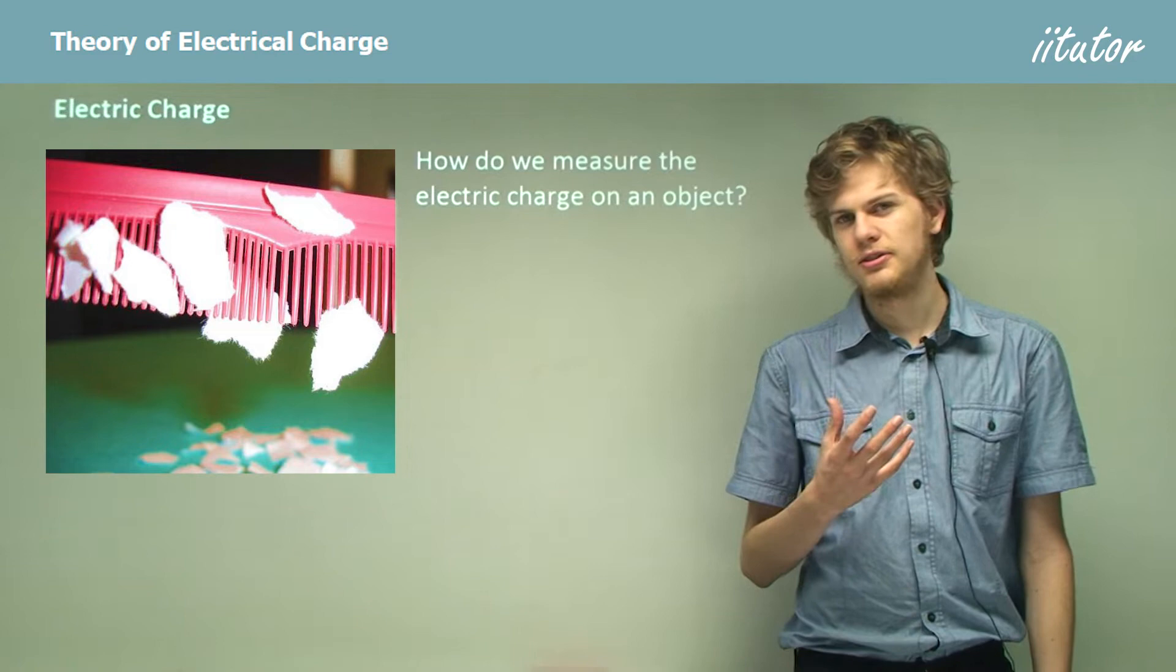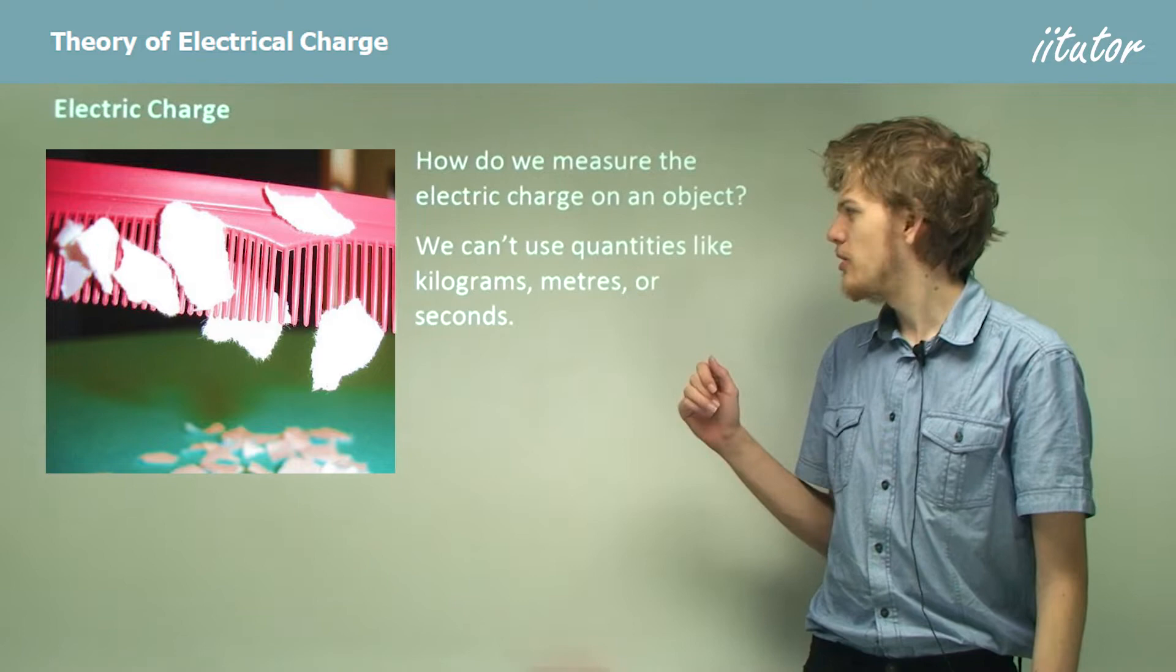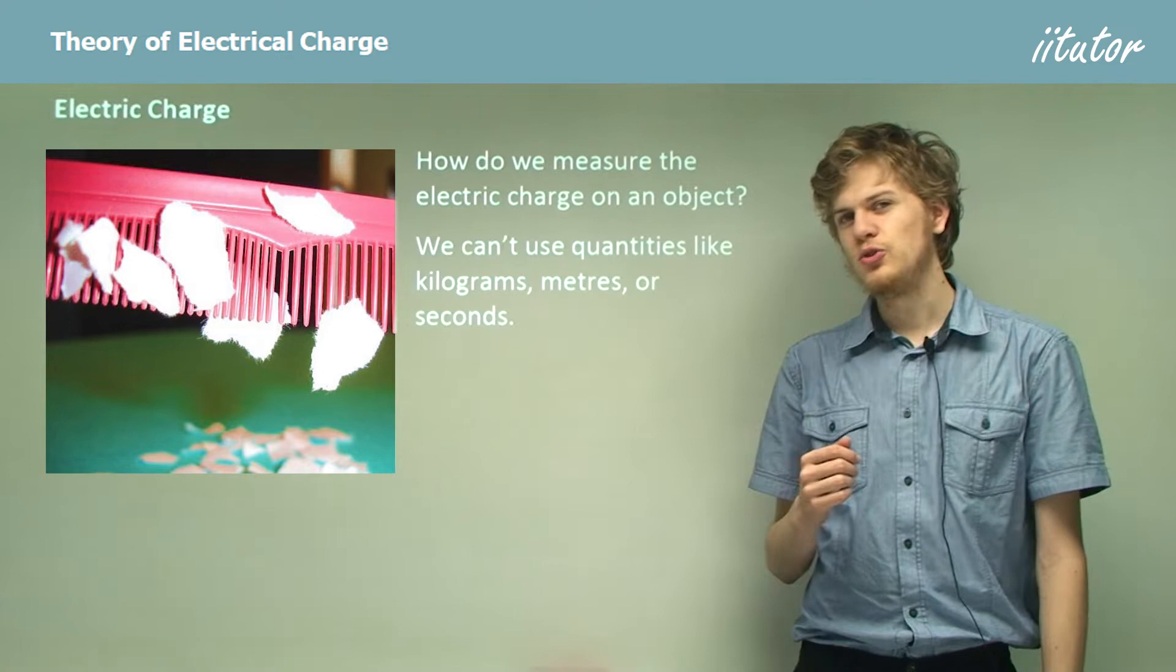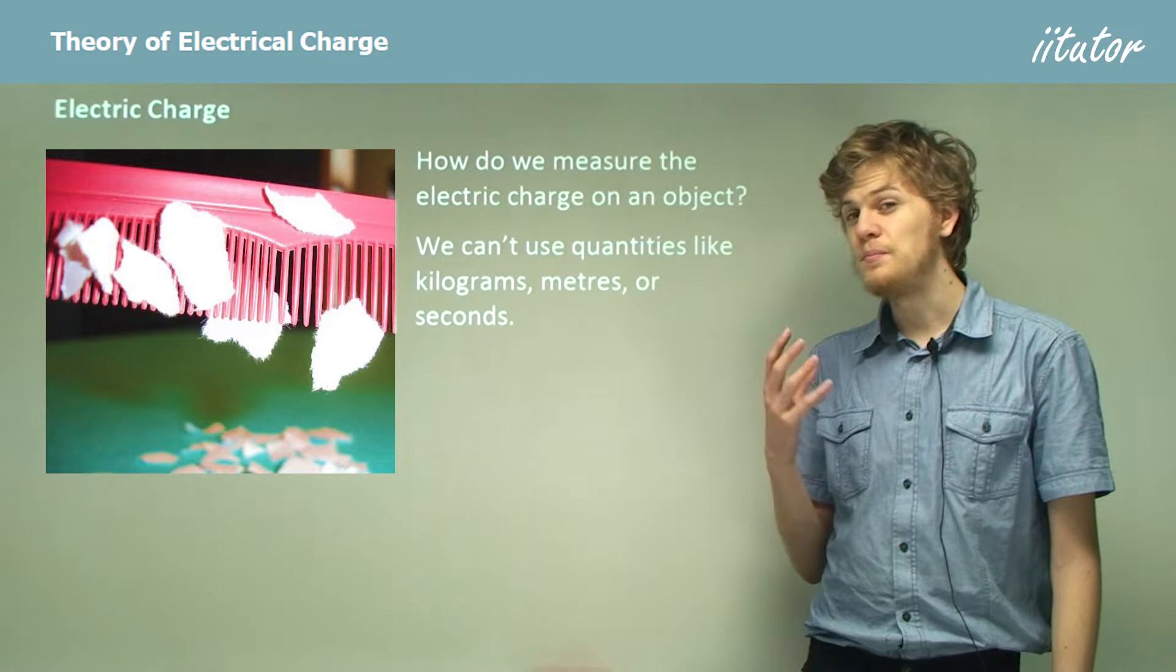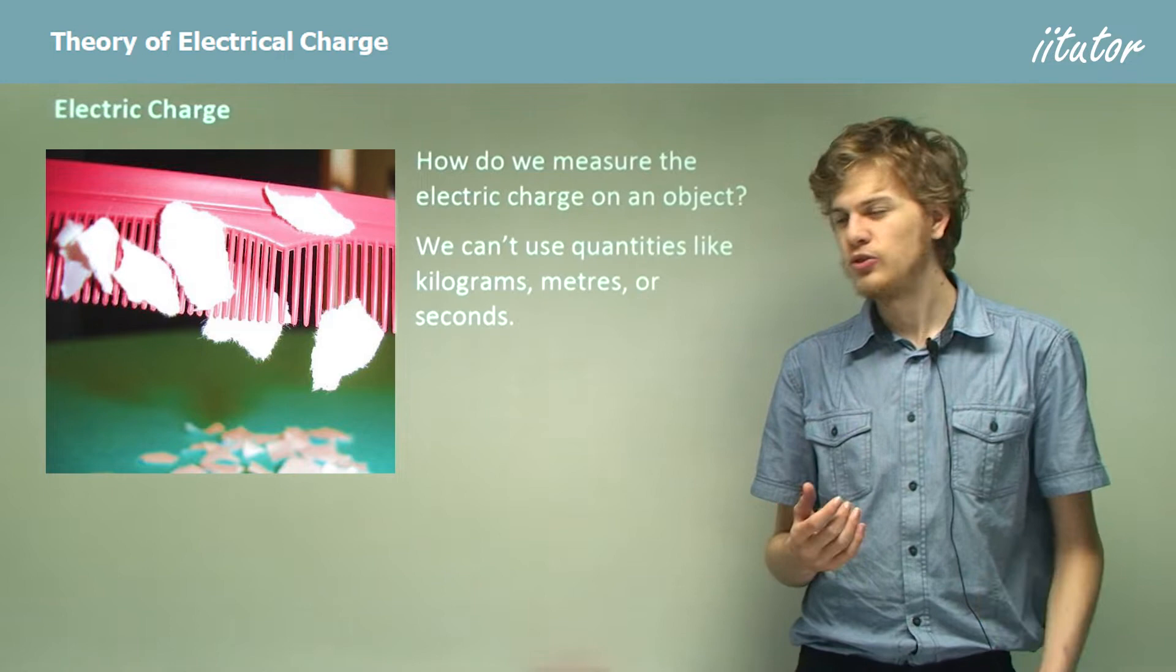So how exactly do we measure electric charge? There might be a bit of a tricky one. We can't use kilograms, we can't use meters, and we can't use seconds. We can't say something like, this plastic comb has two kilograms of electric charge on it. It wouldn't make sense. The comb already has a mass, it already has a length, and it's already existing for a number of seconds. So we can't use any of these units to measure electric charge.